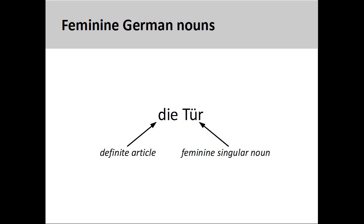The German noun 'Tür,' meaning door, has a feminine grammatical gender, so its definite article is 'die.'